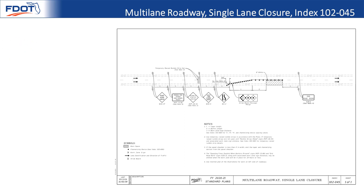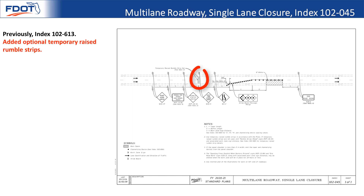Index 102-045, multi-lane roadway single lane closure, was previously index 102-613. One of the bigger changes is that there are optional temporary raised rumble strips that may be used at the designer's discretion. The usage criteria has moved to the FDM, and the designer can choose whether to include them — it should be called out in the plans via phasing plan sheets or notes. Sheet 2 was deleted, the device layout has changed slightly, and note number one now references index 102-000 for work zone sign distance, buffer length, taper length, and channelizing device spacing.